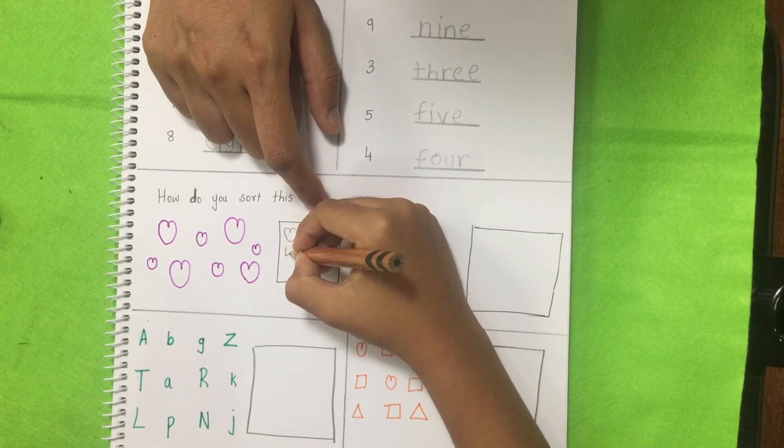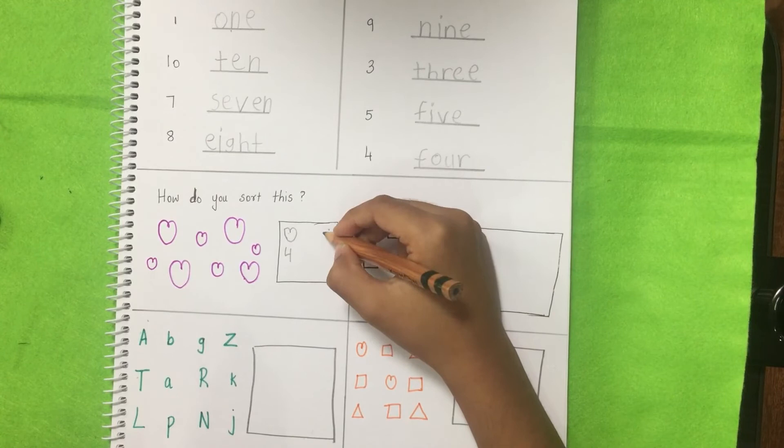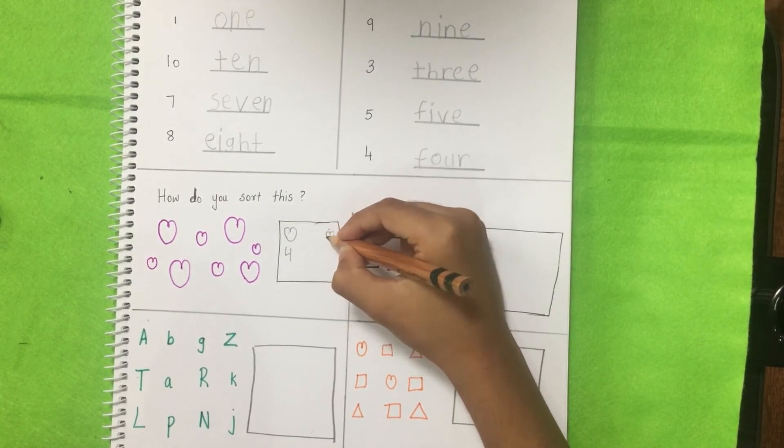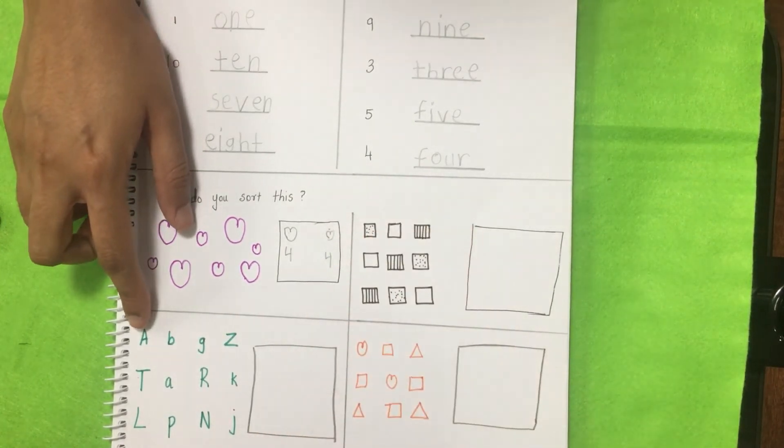I am going to write four, because four big hearts. And four small hearts. Okay. That small only. Can you try this?